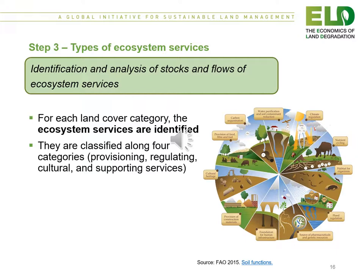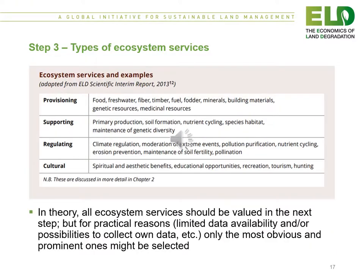Step three continues with the identification and analysis of stocks and flows of ecosystem services. For each land cover category identified, the ecosystem services are identified, classified along four categories: provisioning, regulating, cultural, and supporting services. In theory, all ecosystem services should be valued, but for practical reasons such as limited data availability or possibilities to collect one's own data, only the most obvious and prominent ones might be selected.